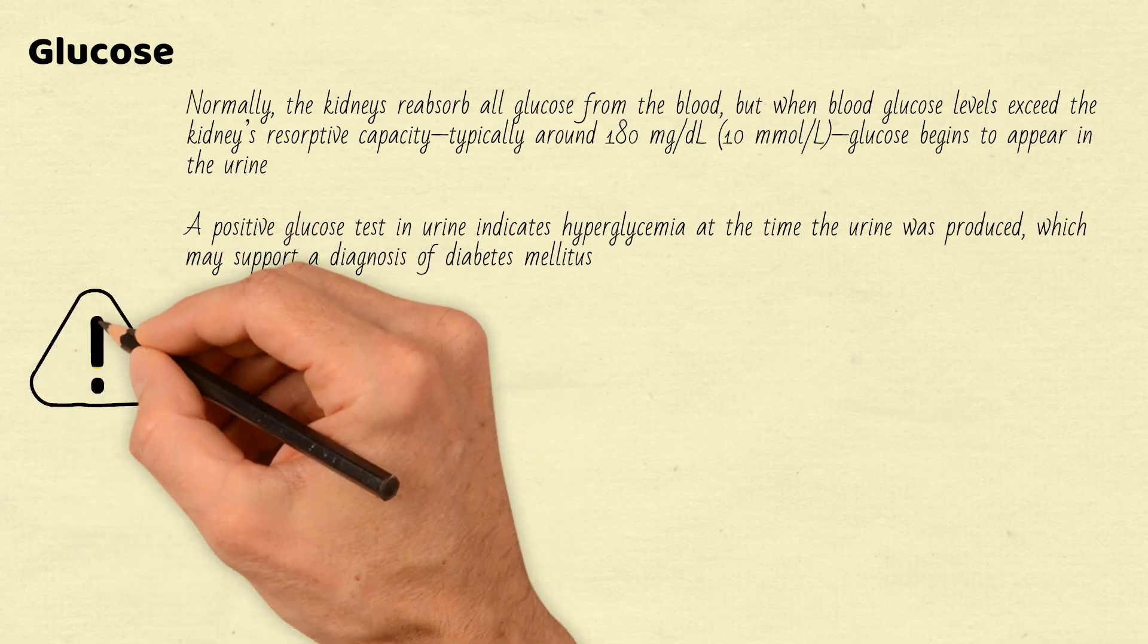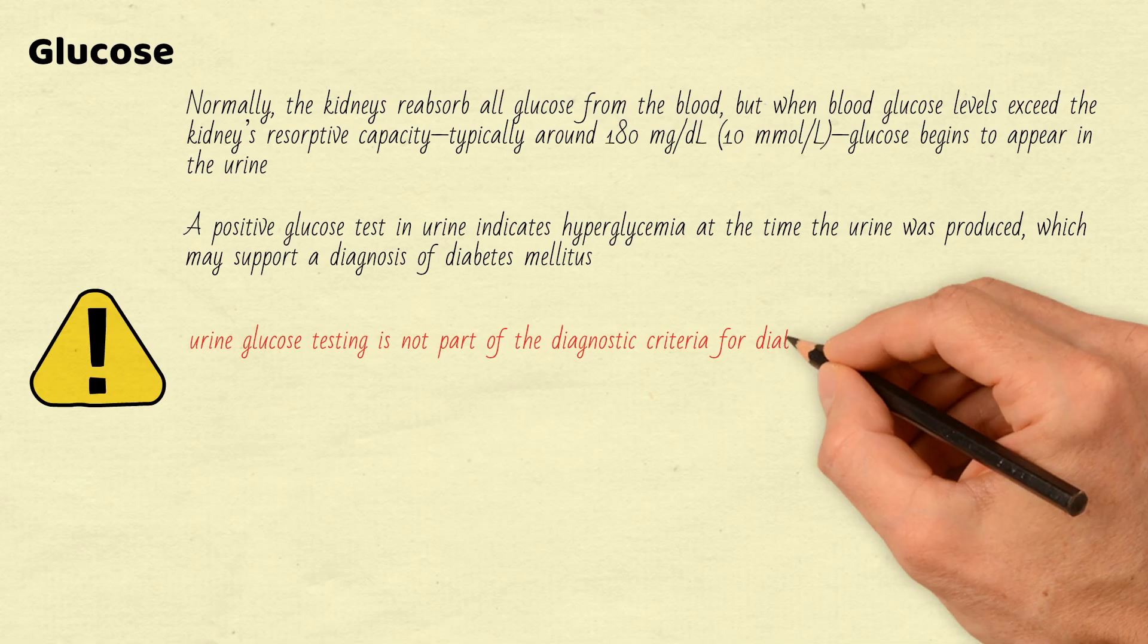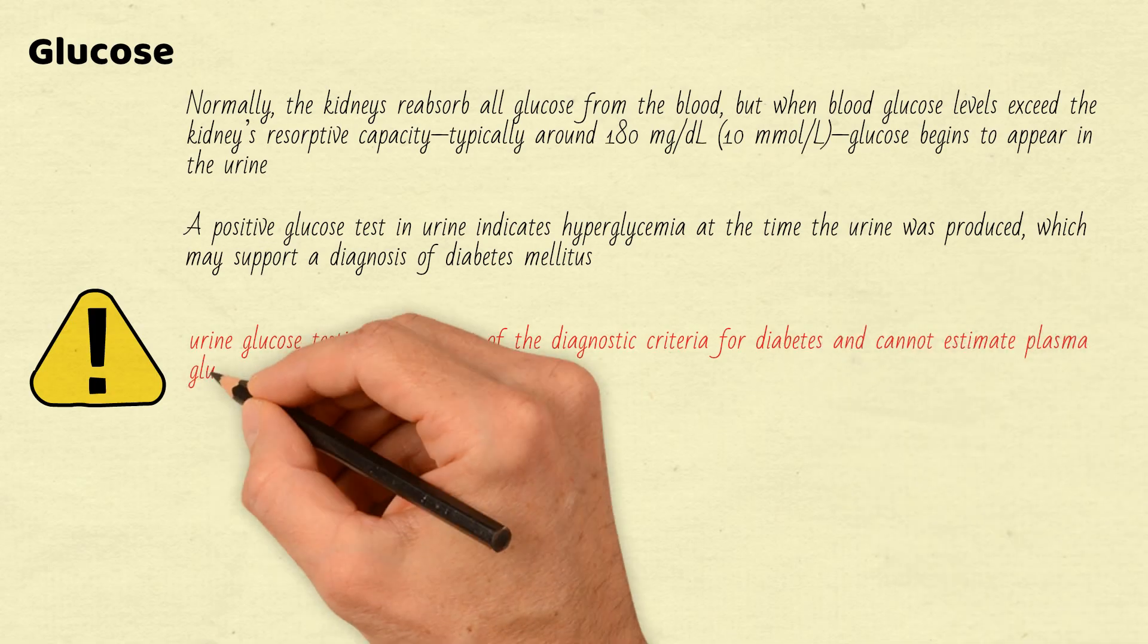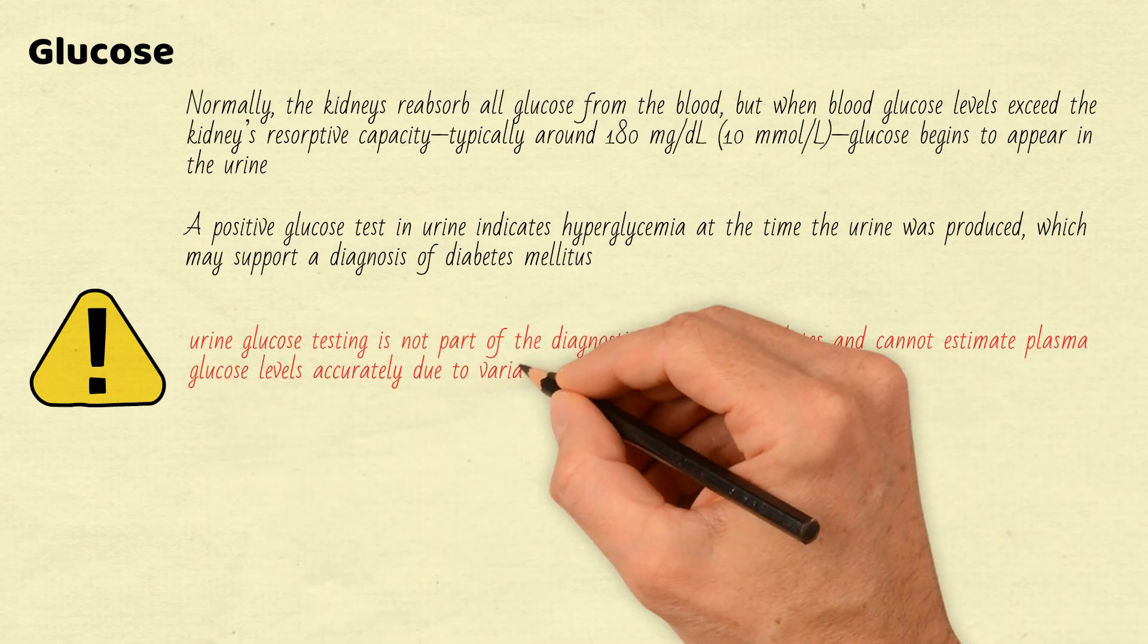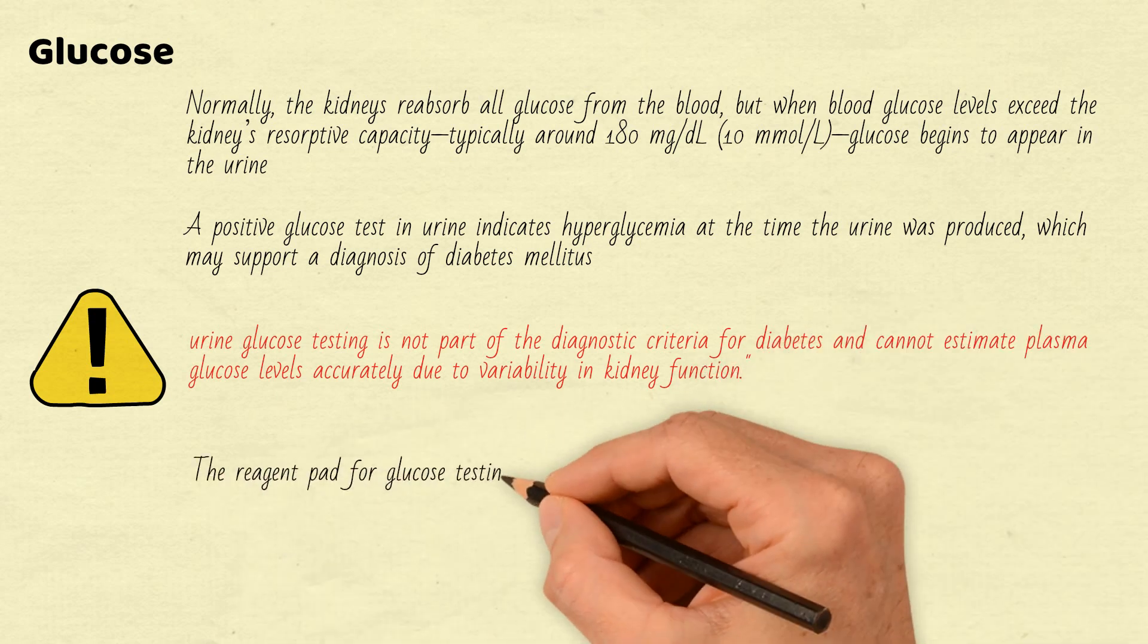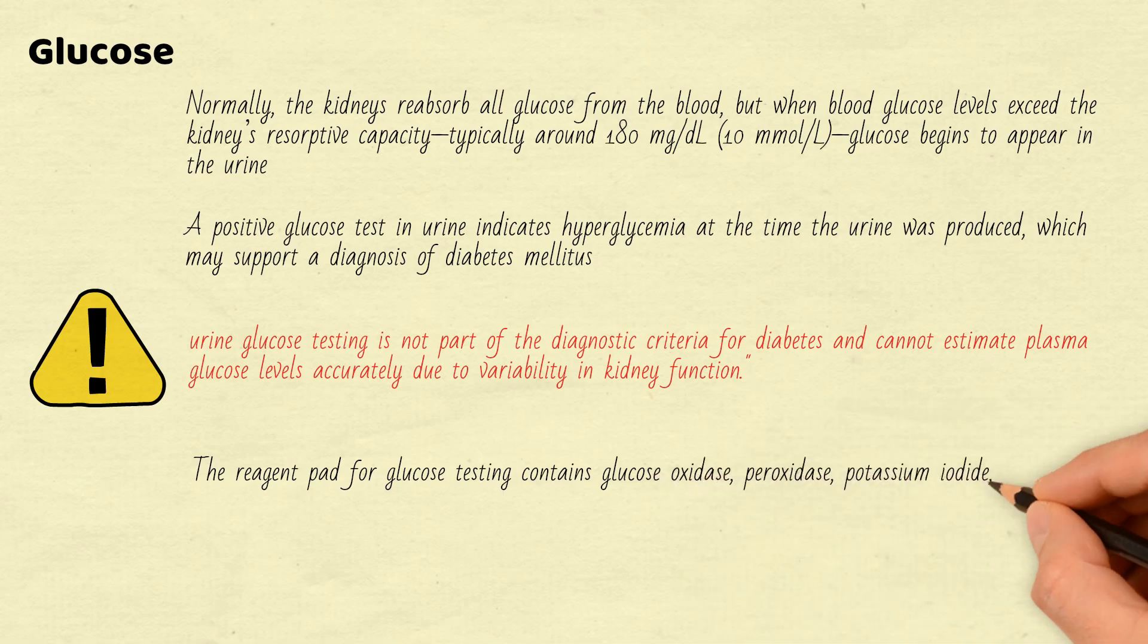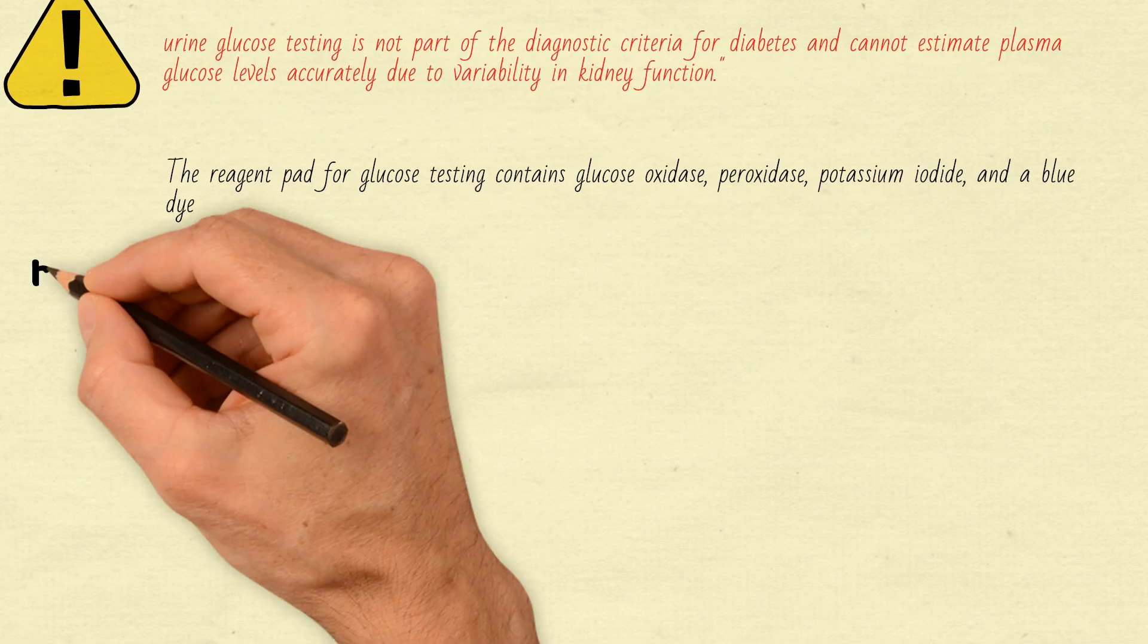However, it's important to note that urine glucose testing is not part of the diagnostic criteria for diabetes and cannot estimate plasma glucose levels accurately due to variability in kidney function. The reagent pad for glucose testing contains glucose oxidase, peroxidase, potassium iodide, and a blue dye.